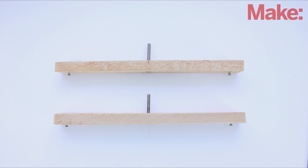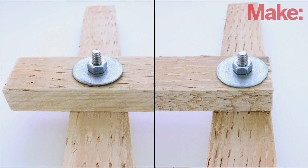To assemble the frame, insert a ¼ inch bolt through the holes in the two side boards. Then, fit them through the corresponding holes on the top board and secure them in place with a washer and nut.